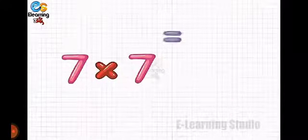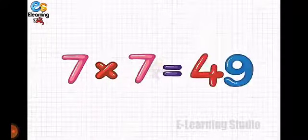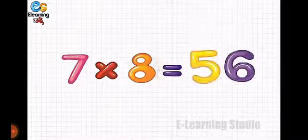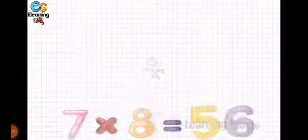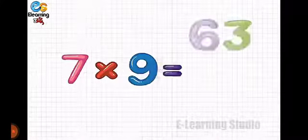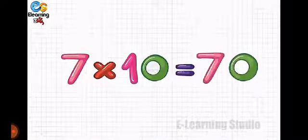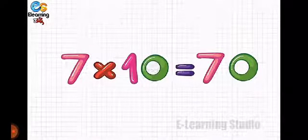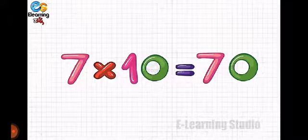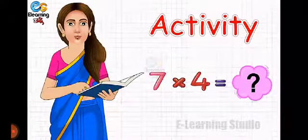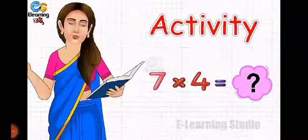Seven sevens are forty-nine. Seven eights are fifty-six. Seven nines are sixty-three. Seven tens are seventy. Now let's move to your favorite activity — activity number one.